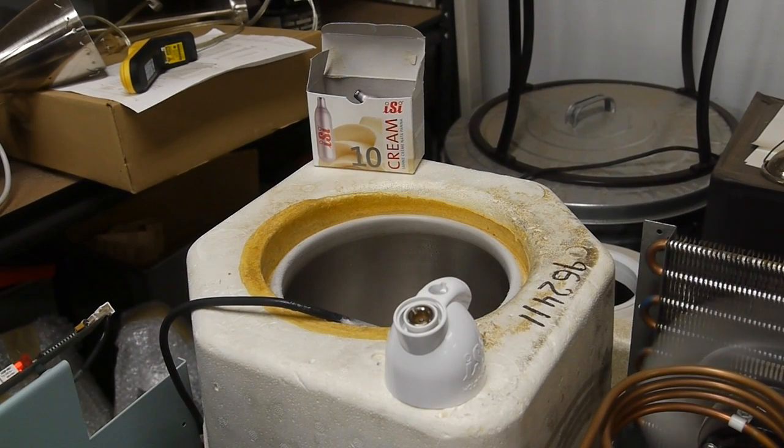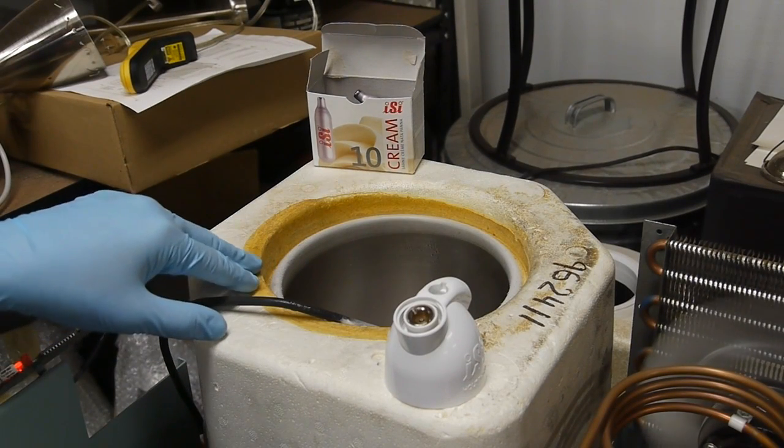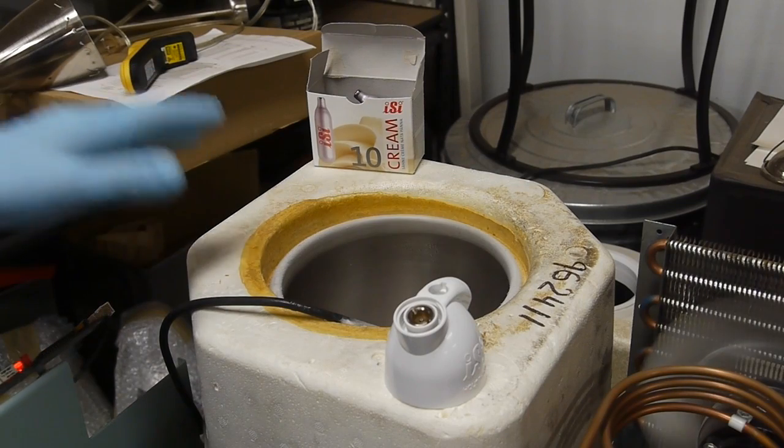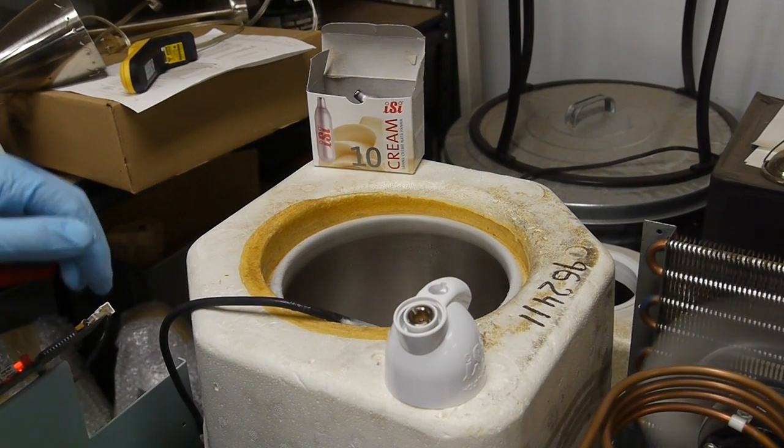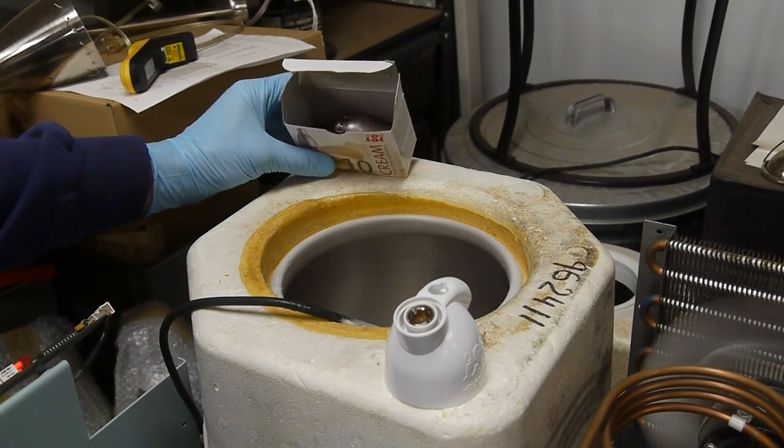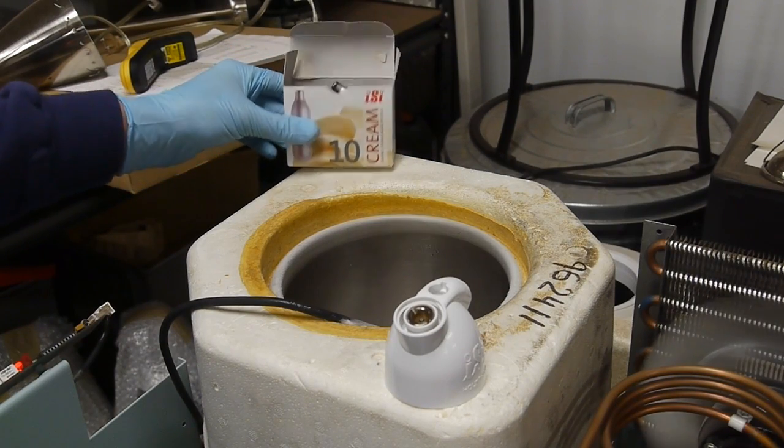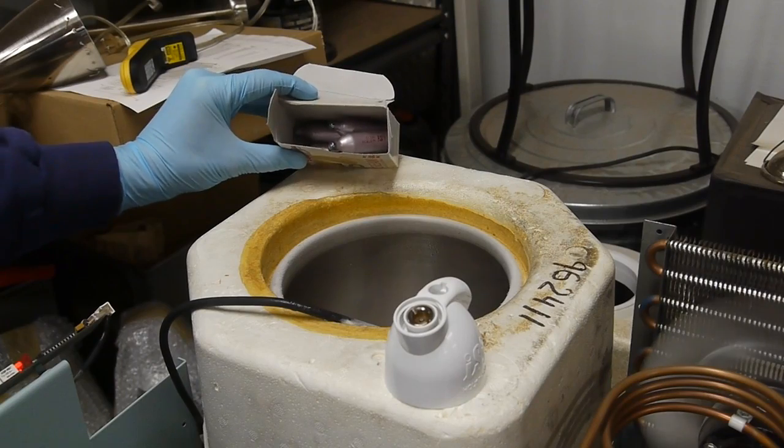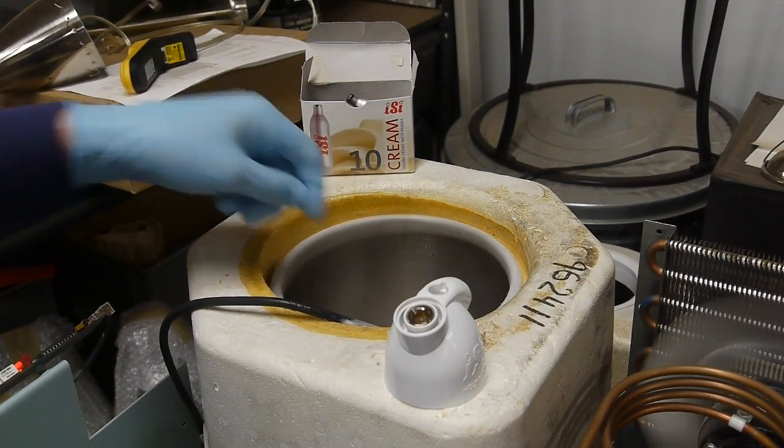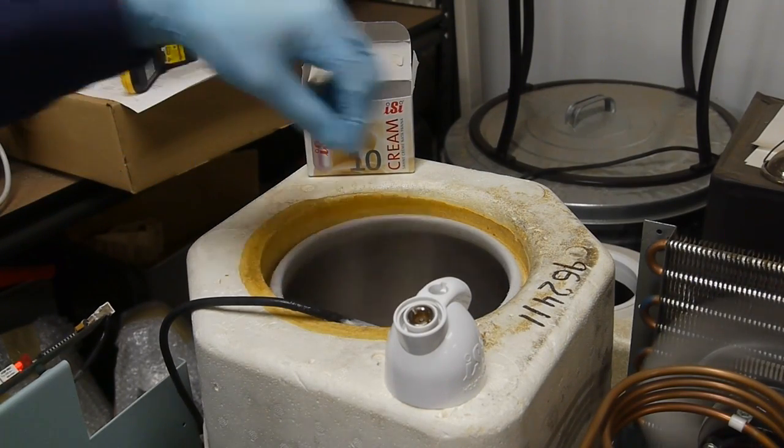In a previous episode, I described how I repaired this negative 100 degrees C freezer. One of the things we can do with those low temperatures is liquefy nitrous oxide. I've got a bunch of these little nitrous oxide cartridges that are sold for making whipped cream at home, and down in the cold chamber I've got a couple of these cartridges.